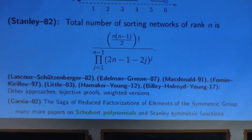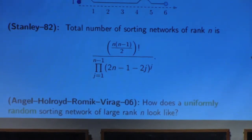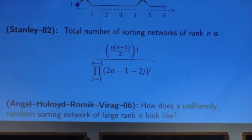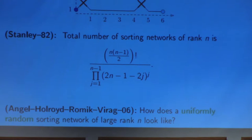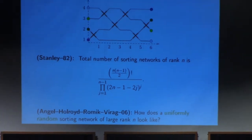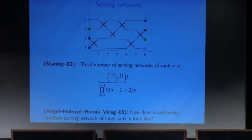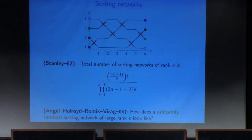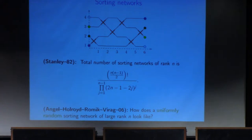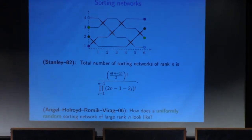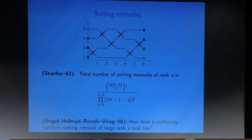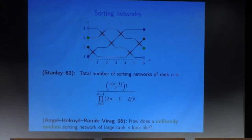First, let's say something about random objects. The main interesting developments happened about ten years ago, where Omar Angel, Alexander Holroyd, Dan Romik, and Virag asked: fix N and choose a sorting network uniformly at random — how does it really look when N is large? The sorting network is a complicated object, so you can clarify what exactly you mean by that question in different ways, and the answers will be very different.